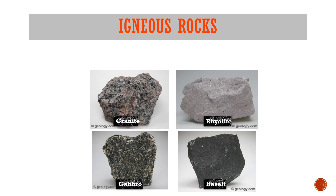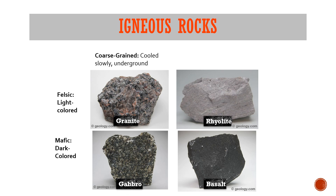Looking at four rock samples — granite, rhyolite, gabbro, and basalt — granite and rhyolite are felsic rocks, meaning they are light in color. Gabbro and basalt are mafic rocks, meaning they are dark in color. Granite and gabbro are coarse-grained rocks, also called phaneritic. Rhyolite and basalt are fine-grained rocks, called aphanitic, where cooling occurs quickly at the surface.